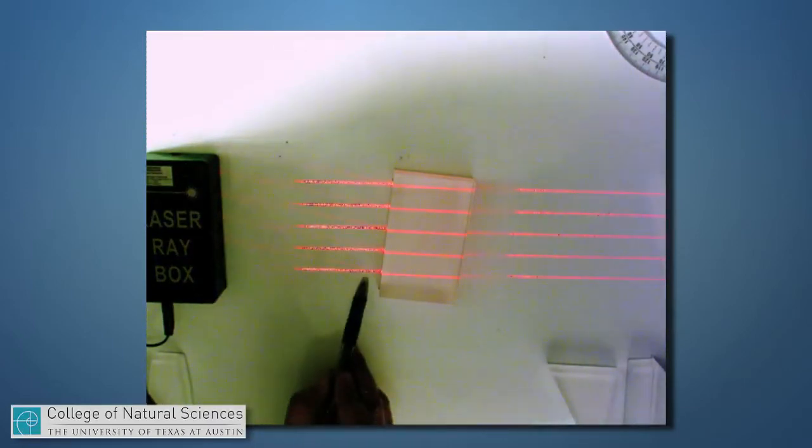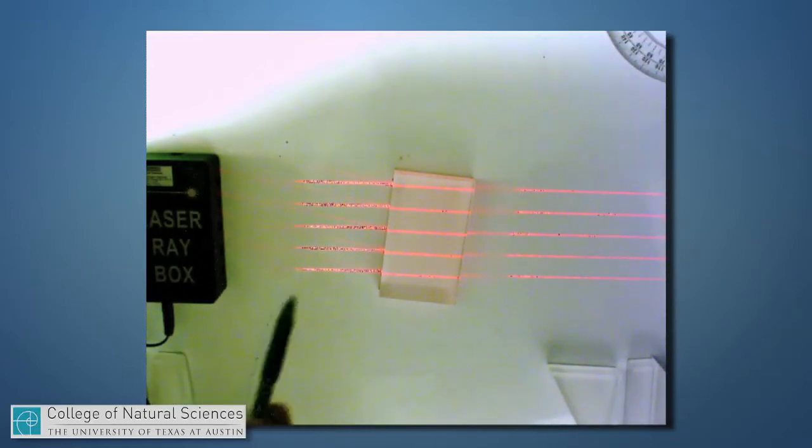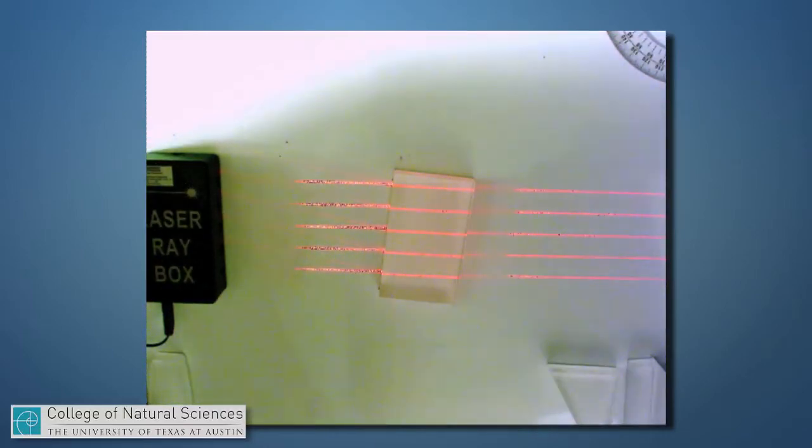But you can also see that there is reflected light coming back toward my little laser box, and it obeys the law of reflection. This is actually angle of incidence equals angle of reflection, because this is a nice, smooth, mirror-like surface. It's a fairly polished piece of plastic, and so the process of reflection happens much like it would on a polished mirror.